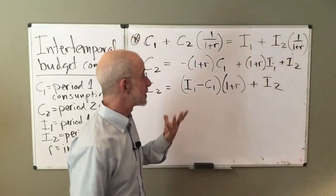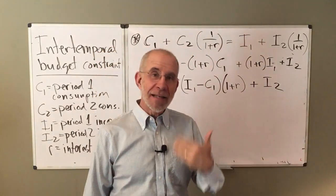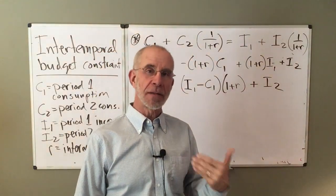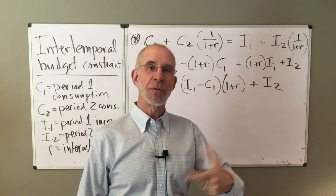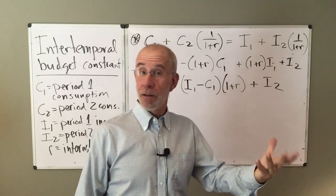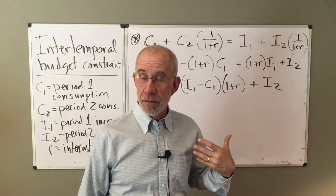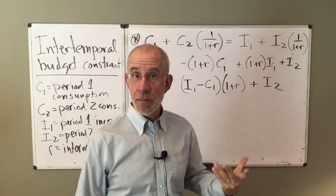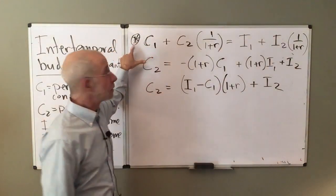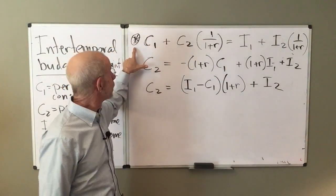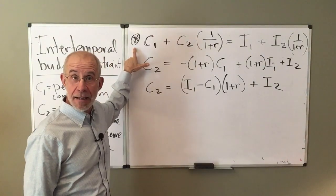Instead, they're going to have to live within their means over the two periods. Now what does that mean conceptually? It means that the discounted value of consumption over the two periods has to be equal to the discounted value of income. Your consumption today and your consumption tomorrow has to be financed by the income that you receive.